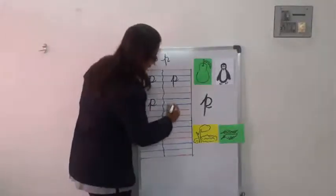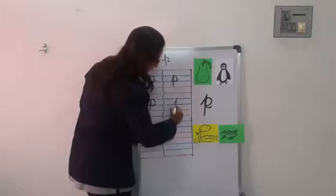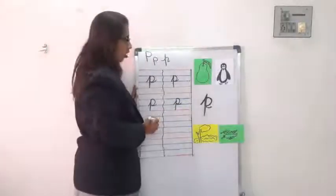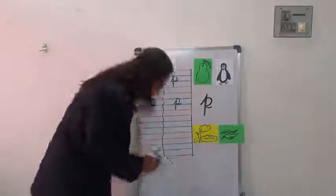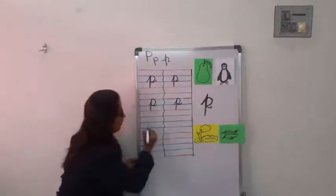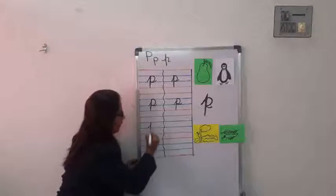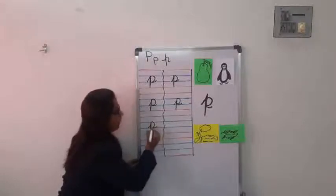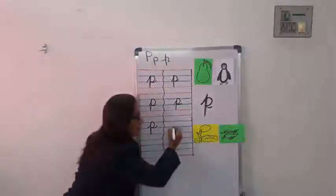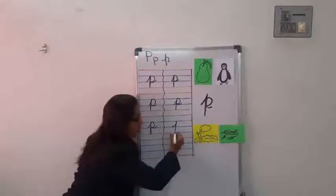And P for pumpkin. Okay? Standing line, then standing line, and take the line up. Curve. P for peacock. Okay? Now again we will do it. P for penguin.